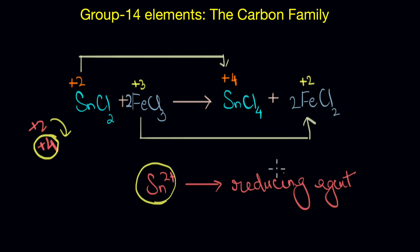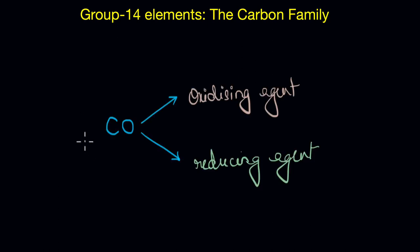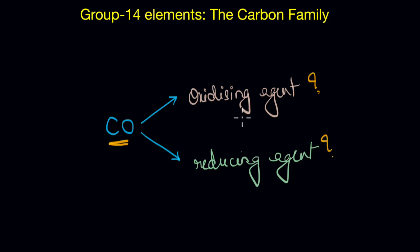Let's now solve a question to see if you really understood what we have been talking about. The question is: would carbon monoxide most likely act as an oxidizing agent or a reducing agent? Pause the video, take a moment, and think about it. To solve this, we first need to find out the oxidation state of carbon in carbon monoxide, and then see if it can attain a more stable state by gaining or losing electrons. If it attains a more stable state by gaining electrons, then it acts as an oxidizing agent.